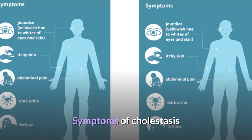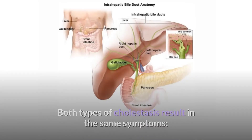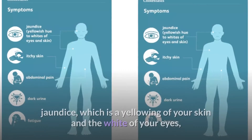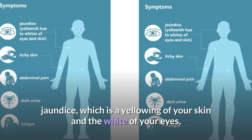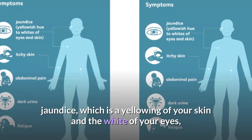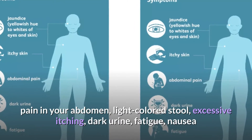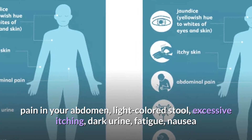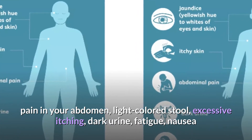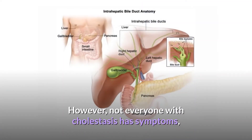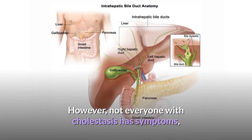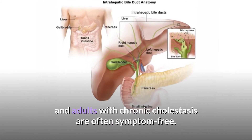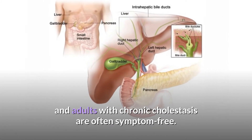Symptoms of cholestasis. Both types of cholestasis result in the same symptoms: jaundice, which is a yellowing of your skin and the whites of your eyes; pain in your abdomen; light-colored stool; excessive itching; dark urine; fatigue; and nausea. However, not everyone with cholestasis has symptoms, and adults with chronic cholestasis are often symptom-free.